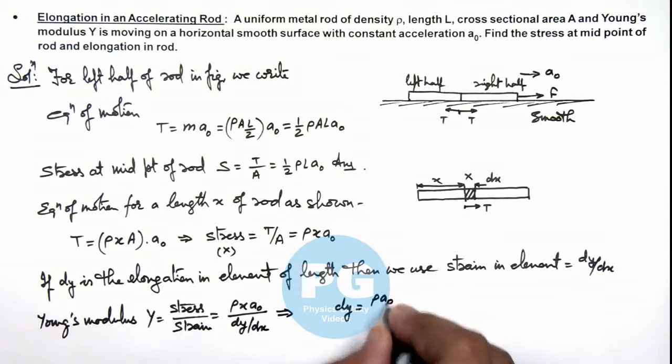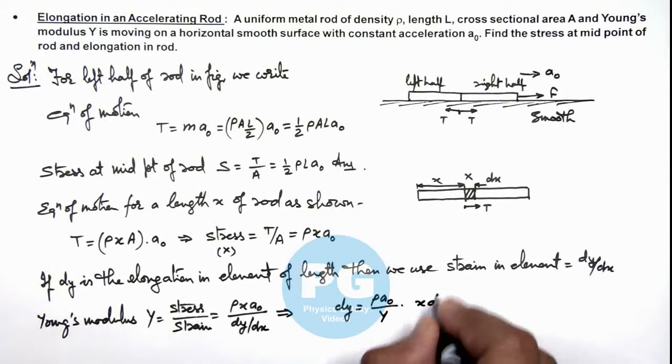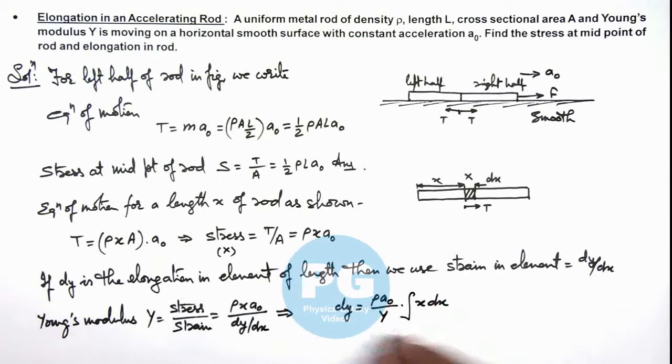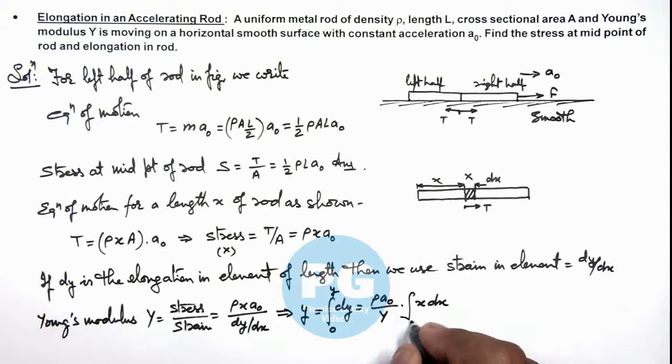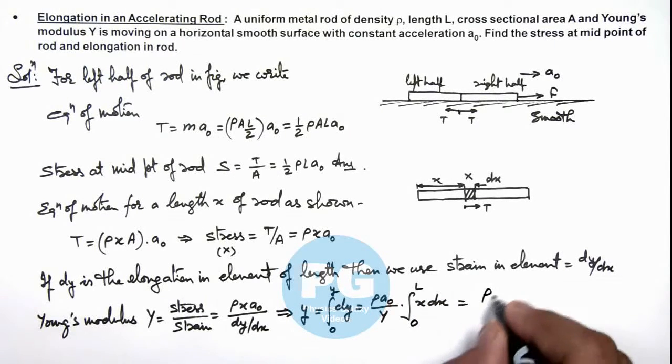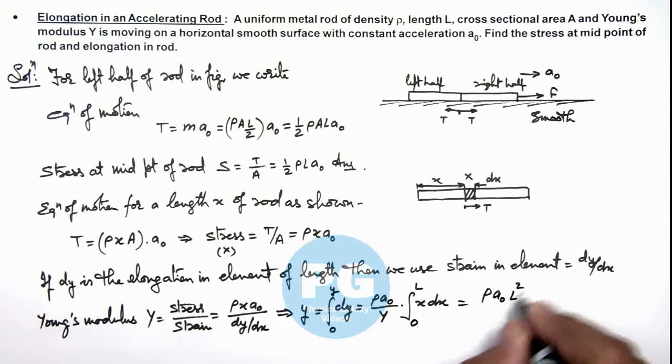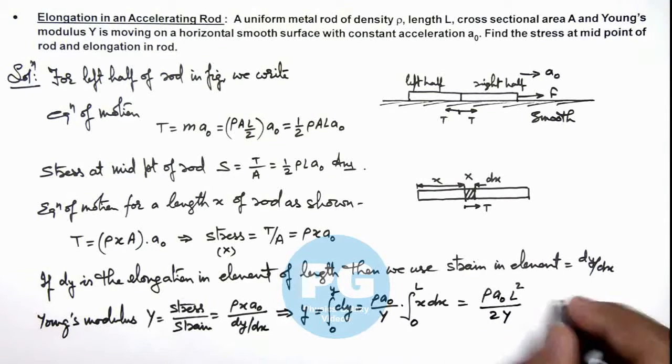ρa₀/Y multiplied by x dx. We can integrate this term to calculate the total elongation in the rod, which is integrated from zero to Y, and here it is integrated from zero to L. This is giving us the final result as ρa₀L²/2Y. That is the result for the elongation in rod.